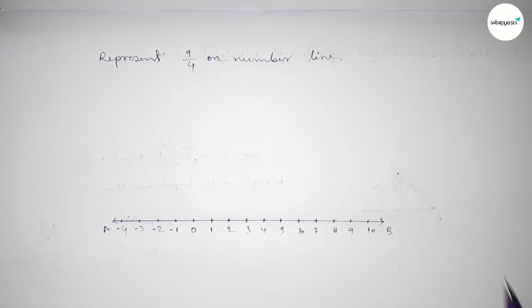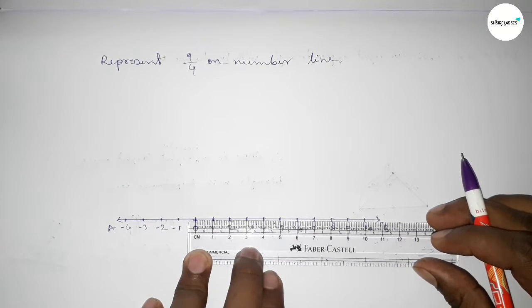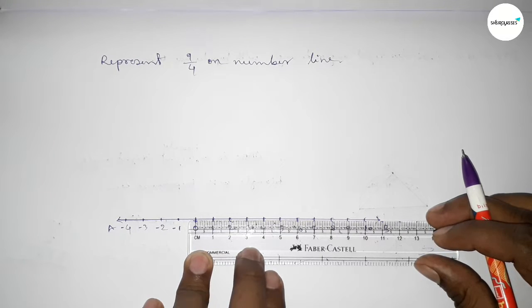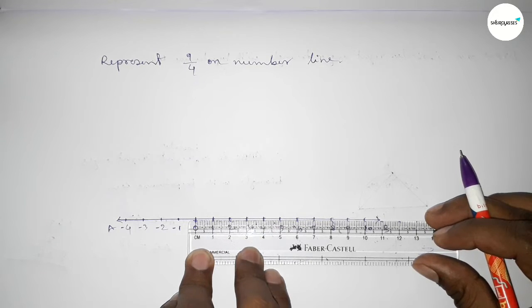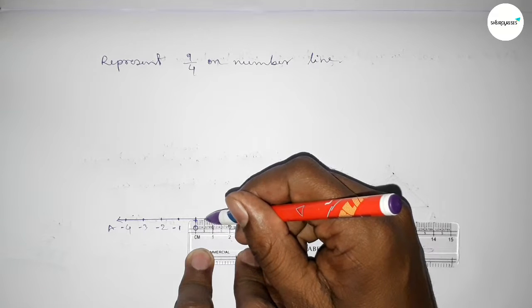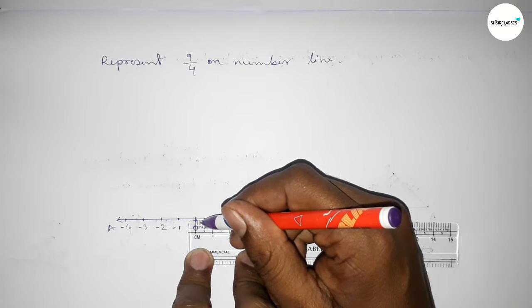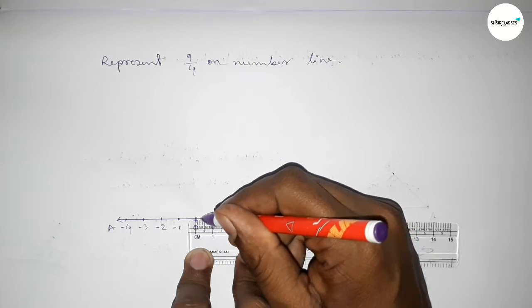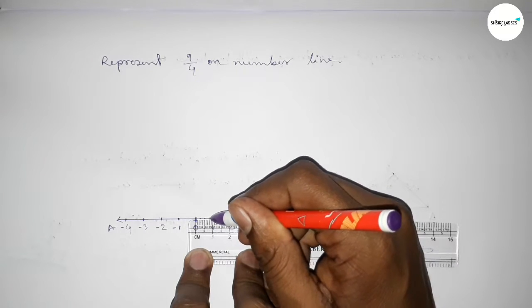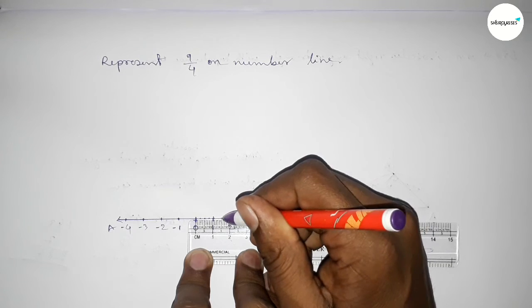Now we have to divide the distance between any two numbers into four equal parts. First divide the distance between any two numbers into two parts, then divide into four parts. So first dividing the distance between 0 to 1 — taking the half between 0 to 1, then dividing between 0 to 0.5, so this is approximately 0.25. Again divide the distance between 0.5 to 1, so this is approximately 0.75.